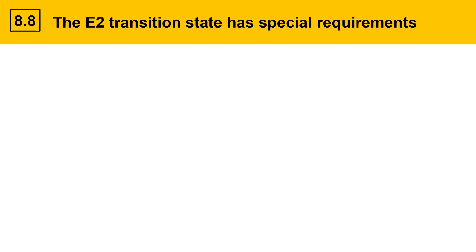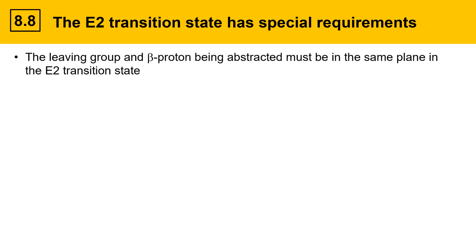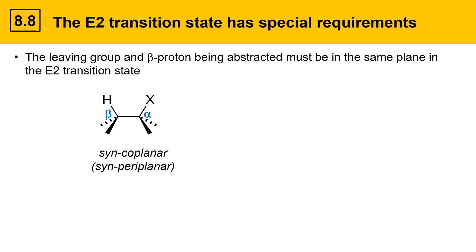The E2 transition state has special geometry requirements. The leaving group and the beta proton being abstracted must lie in the same plane for the E2 transition state. There are two ways to do that. When the leaving group and the beta proton lie in the same plane and are close to each other, this is called syn. This conformation is called syncoplanar or synperiplanar, which is an equivalent term.